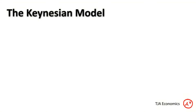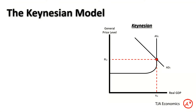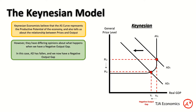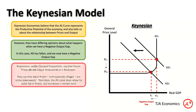Now the Keynesian model. We've got our diagram with AS and AD at full employment. Keynesian economists tell us the AS curve also represents productive potential and the relationship between prices and output. However, when AD falls, we again get a negative output gap. Unlike classical economists, Keynesian economists say that factor prices do not adjust downwards in a recession.